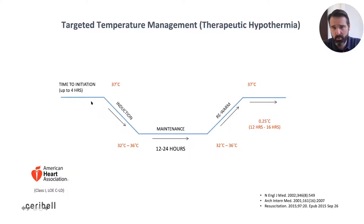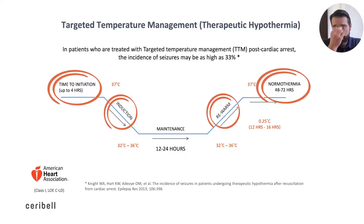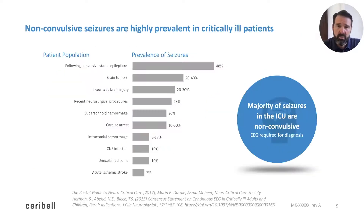The time to initiation can be up to four hours, at least in the published literature, and we want to start this as soon as possible. The interesting part is that across this timeline — induction, rewarming, and normothermia — patients can often experience non-convulsive seizures or seizures in general. The incidence is high, and may be even higher than we expect. One study highlighted that up to one out of every three patients may be experiencing seizures during this period. Non-convulsive seizures can be an unrecognized phenomenon across many ICU etiologies.